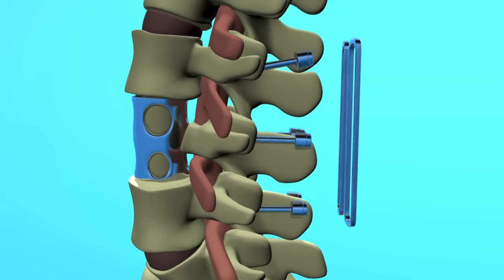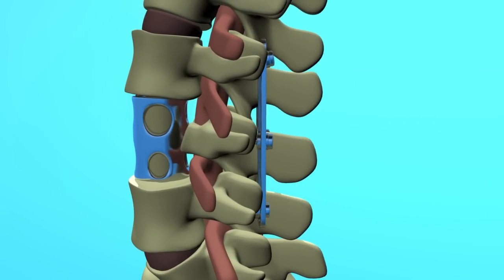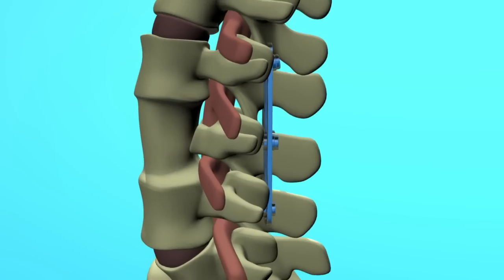Holes are then drilled into the healthy vertebrae, and metal rods are used to help stabilize the VBR as the bone graft grows into place.